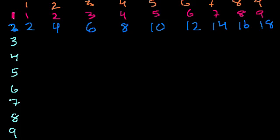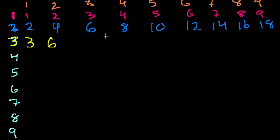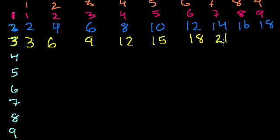Let's do the 3 times tables in yellow. 3 times 1 is 3. Notice 3 times 1 and 1 times 3 are the same value. 3 times 2 is the same as 2 times 3, so it's 6 — 3 plus 3, or 2 plus 2 plus 2. Every step we increase by 3: 3 times 3 is 9, 3 times 4 is 12, 12 plus 3 is 15, 15 plus 3 is 18, 18 plus 3 is 21, 21 plus 3 is 24, 24 plus 3 is 27. So 3 times 9 is 27.